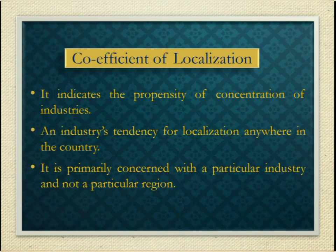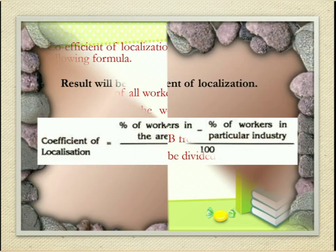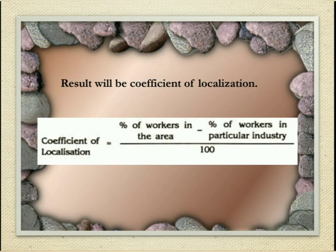Next, the coefficient of localization. The coefficient of localization indicates the propensity of an industry to concentrate — that is, an industry's tendency for localization anywhere in the country. It is primarily concerned with a particular industry and not a particular region. The coefficient of localization can be found using the following formula: calculate (A) the percentage of all workers found in each region, and (B) the percentage of the workers of that industry in each region. The positive deviations of B from A are to be added, and the sum thus derived is to be divided by 100. The result is the coefficient of localization, i.e., (percentage of workers in the area minus percentage of workers in a particular industry) divided by 100.